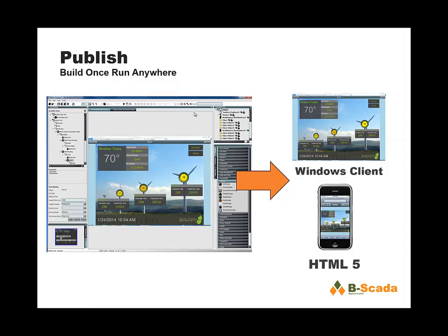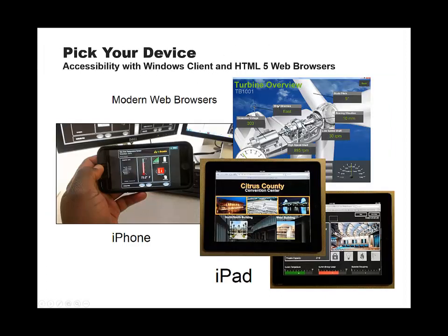Those screens will open in either a Windows thick client, which is perfect for touch screens on a factory floor, kiosks, and digital signage. Or if you have a full-blown desktop computer, those screens will also open in any HTML5 device. So if you have an iPhone, iPad, Blackberry, or desktop browsers from Mac, Linux, or Windows, they will all open those screens as long as they support HTML5 — and most devices do today.